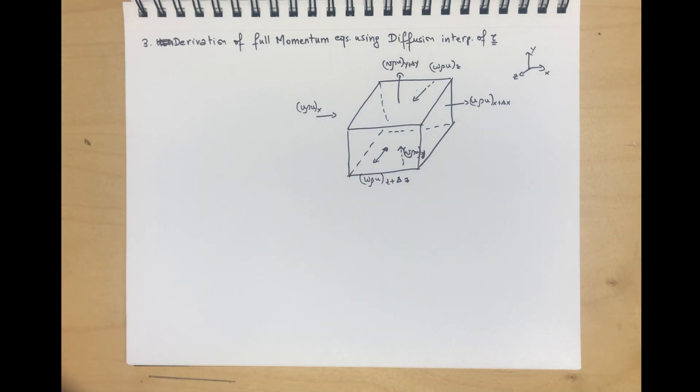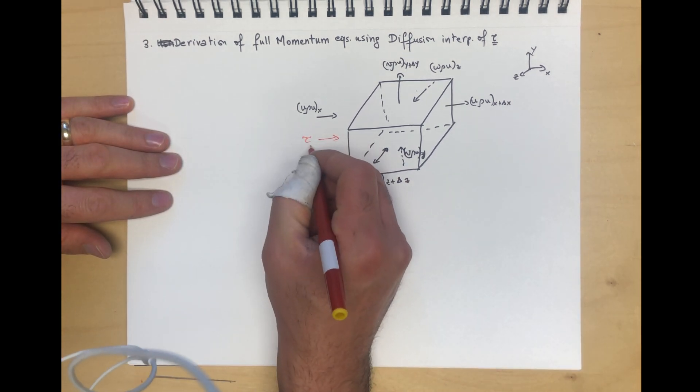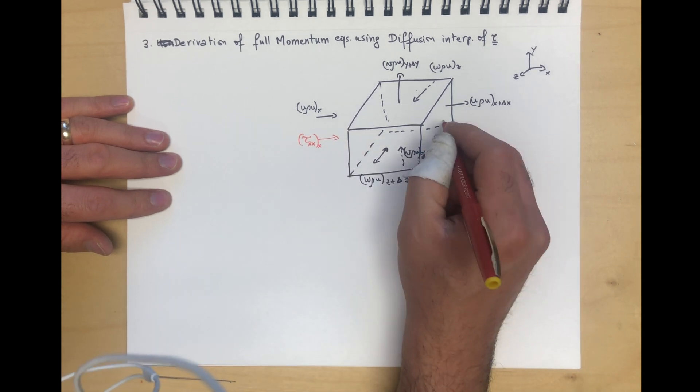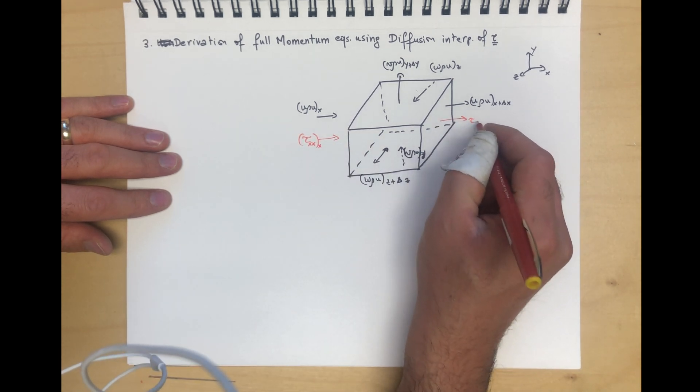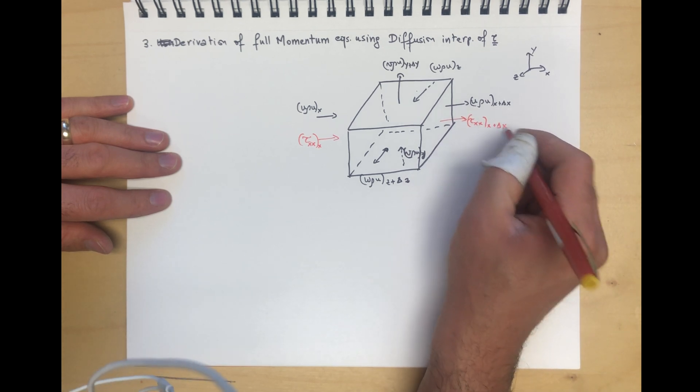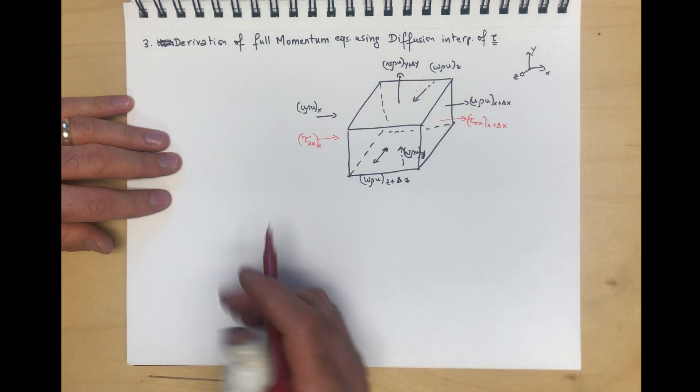We have a diffusive flux, and we're going to call this τ_xx at x, and what's leaving is τ_xx at x plus Δx. This would be the diffusion of x momentum in the x direction, or on an x face.